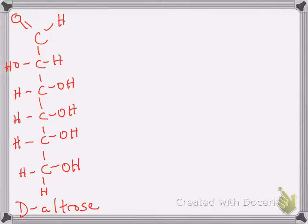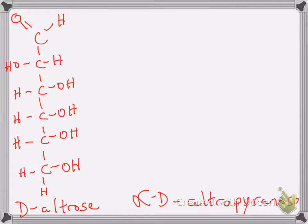In this example, I am going to demonstrate using D-altrose, which is shown here in the straight chain structure, Fischer projection, shown on the left. I'm going to show you how to cyclize that to create alpha-D-altropyranose. That will be the structure I attempt to make from this straight chain structure on the left. If you pause the video, go ahead and give it a try, and then come back and I will go through the rest of the example.